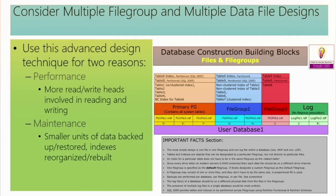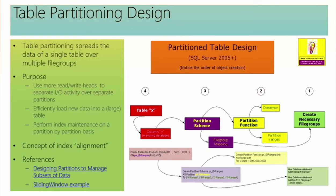I want to note that you could have a table in one file group and a non-clustered index in another file group, or you could actually have one single table spread out over multiple file groups. The reasons for this design are twofold: performance — more read-write heads involved — and maintenance, where you have smaller units of maintenance. You can also back up one file or one file group at a time.